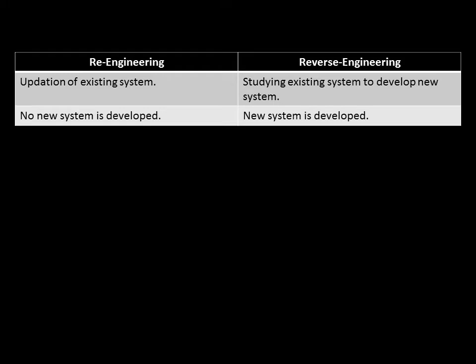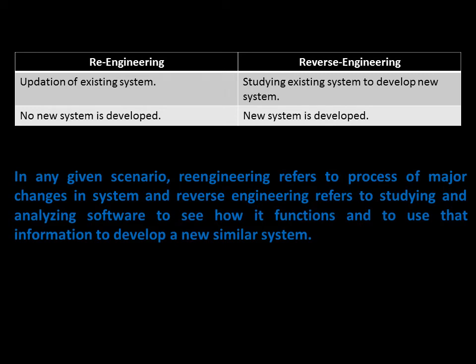In re-engineering, no new system will be developed. In reverse engineering, a new system is developed. Re-engineering refers to the process of making major changes in the system, and reverse engineering refers to studying and analyzing a software to see how it functions and to use that information to develop a new similar system.